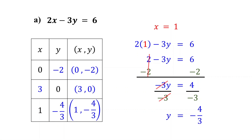Now the table is complete, but these are just a few solutions to the equation. Remember, a linear equation in two variables has infinitely many solutions. Any value of x or y gives a corresponding value for the other variable, resulting in a solution pair (x, y).